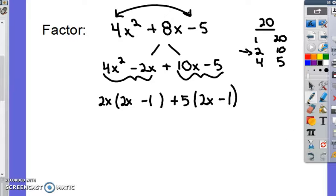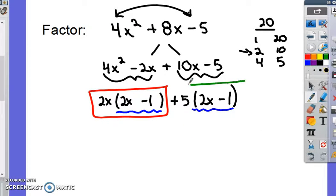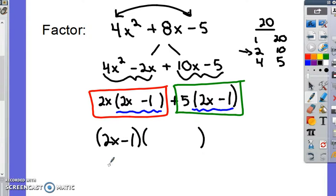While I'm nearly done, I'm noticing now that each of these terms has a 2x minus 1 in it. This term in red has a 2x minus 1, and this term in green has a 2x minus 1. So what I'm going to do is factor a 2x minus 1 out of each of those things and write what's left over. Well, take this thing in red and divide 2x minus 1 out of it, you get a 2x. Okay, take this thing in green and divide 2x minus 1 out of it, you get a plus 5. And now we have a factored form of that quadratic.